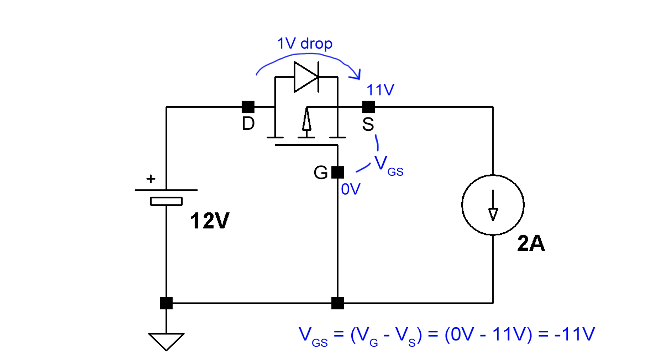And once it's on, you don't have to worry about that parasitic diode anymore, because the resistance between drain and source drops to almost nothing.